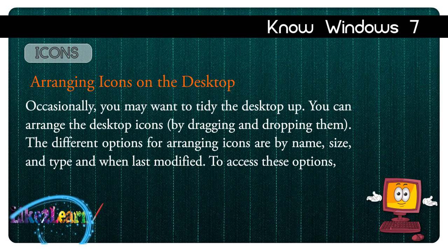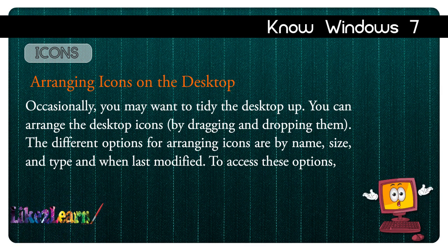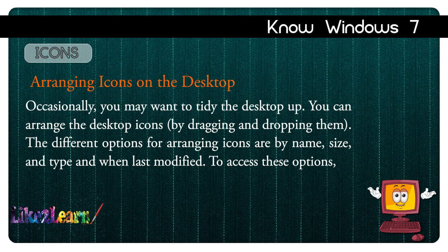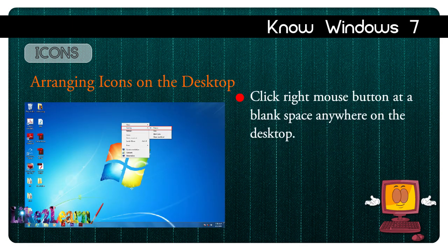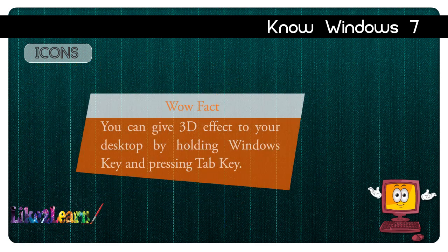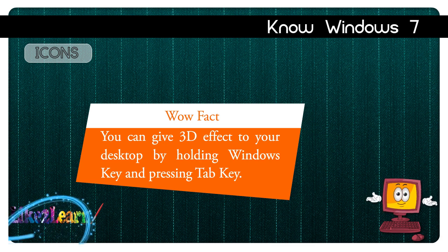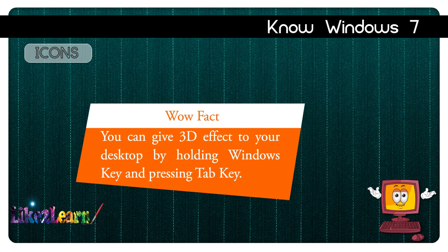Arranging icons on the desktop: occasionally you may want to tidy the desktop up. You can arrange the desktop icons by dragging and dropping them. The different options for arranging icons are by name, size, type, and when last modified. To access these options, right-click on a blank space anywhere on the desktop. When the shortcut menu appears, select Sort By and select your preference.